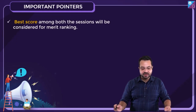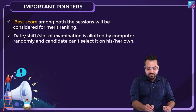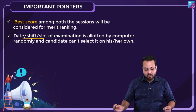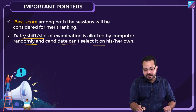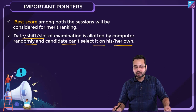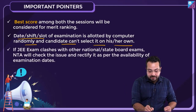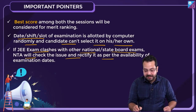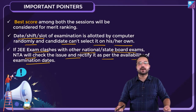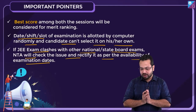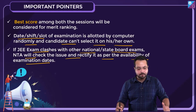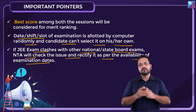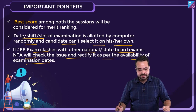The best score among both sessions will be considered for merit ranking. The date, shift, and slot of examination is allotted by computer randomly — candidates cannot select it on their own. If JEE Main clashes with other national or state board examinations, NTA will check the issue and rectify it as per the availability of examination dates. Hopefully your exams will not clash with JEE Main.